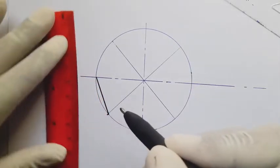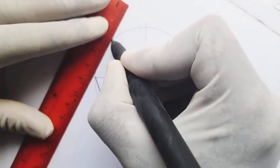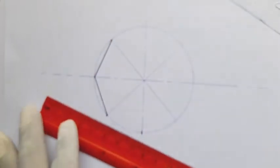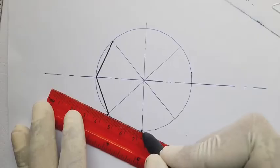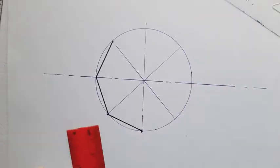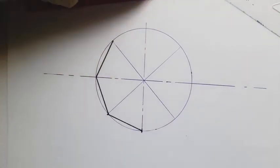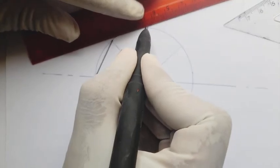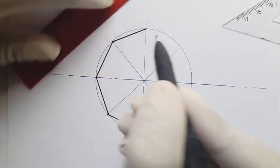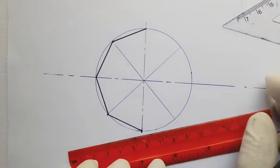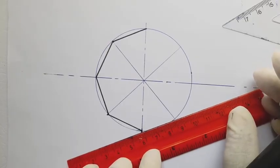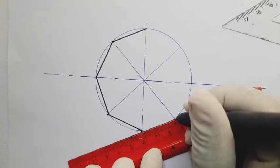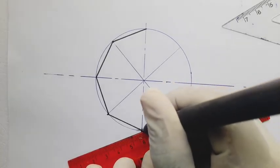This one, this is one, this is two, this is three, this is four. We are drawing an octagon inside a given circle.